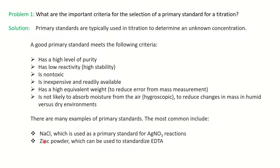There are many examples. NaCl is used as a primary standard for silver nitrate reactions. Zinc powder can be used to standardize EDTA solutions. So NaCl and zinc powder are used to standardize silver nitrate and EDTA solutions, and therefore we call them primary standards. The primary standard finds out the unknown concentration of the analyte or titrant, and if any moisture is present it corrects for that and standardizes the solution, making it ready for titration.